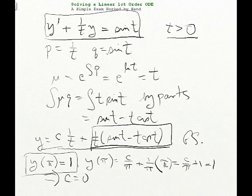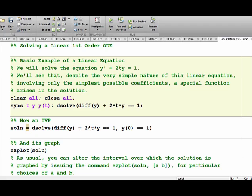Now let's go on to something a little bit more complicated, where we'll invoke MATLAB. And now for the second example. This time we will use MATLAB. So here's a very simple linear differential equation: y' + 2ty = 1. And we're going to see that despite the very simple nature of this linear equation, which involves only the very simplest possible coefficients, nevertheless, a special function arises in the solution. So here's the syntax. We clear all the variables, we close all graphics. We set up some symbolic variables, t, y, and y(t). And we solve the differential equation with dsolve. And there's the preferred format for the command. Let's run it.